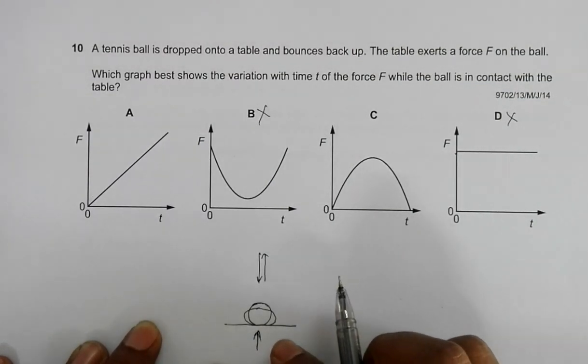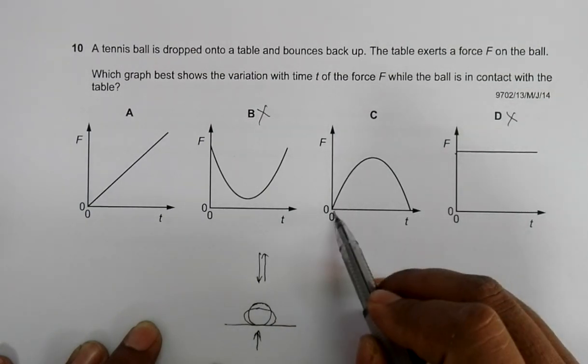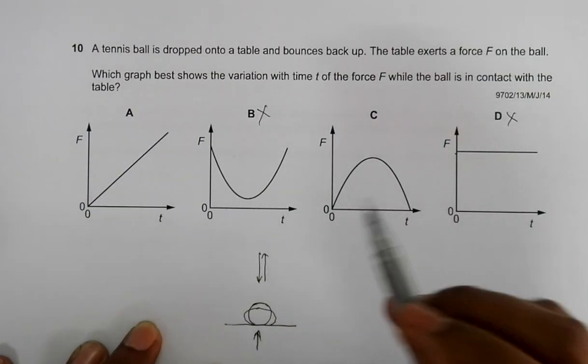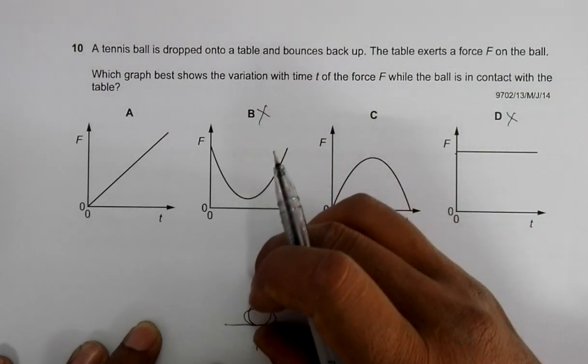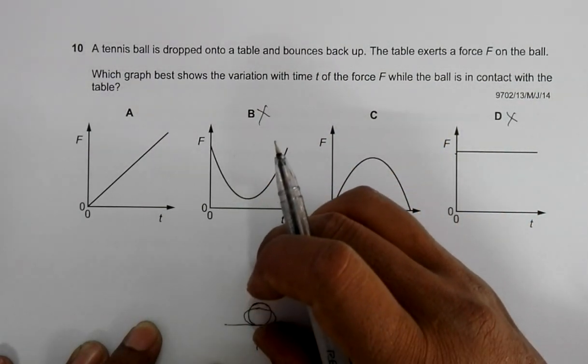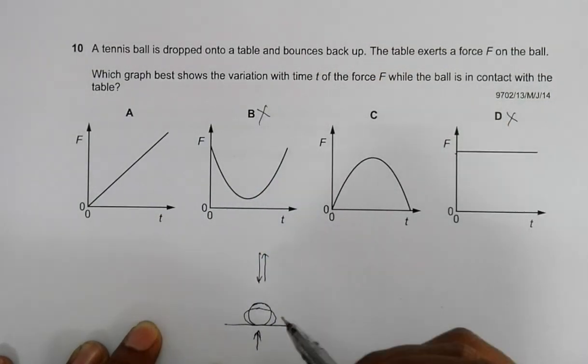When the ball comes back and relaxes after compression, the force again should reduce and become zero. So it first comes down, compresses, then goes back up.